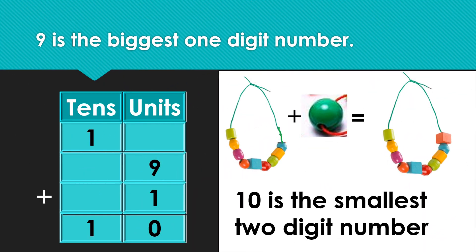Let us now recollect our previous knowledge. 9 is the biggest one-digit number. When we add 1 to number 9, we get number 10. That is, one more digit is introduced. We call it as the 10th place. 10 is the smallest 2-digit number.